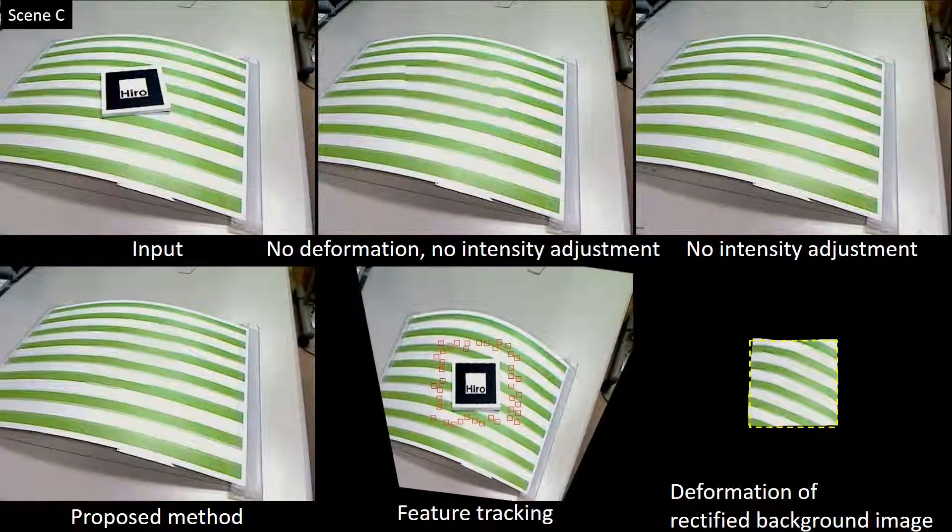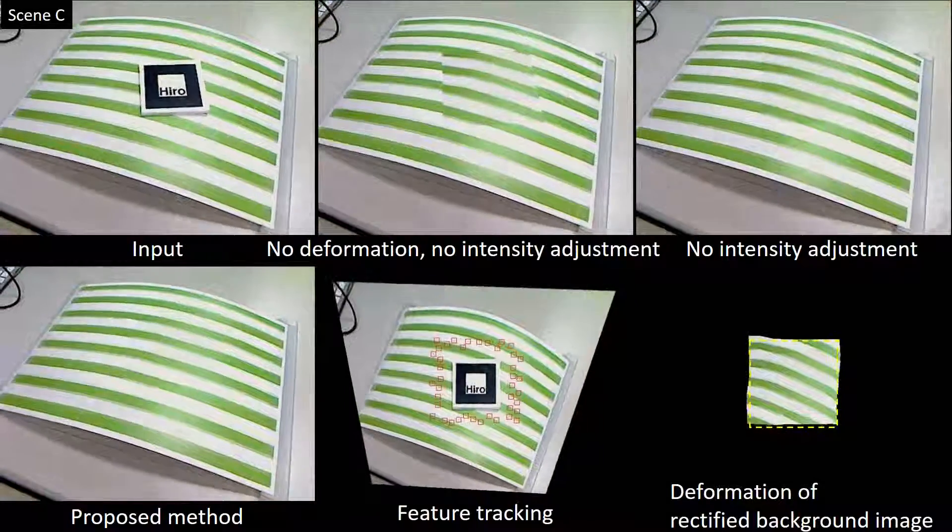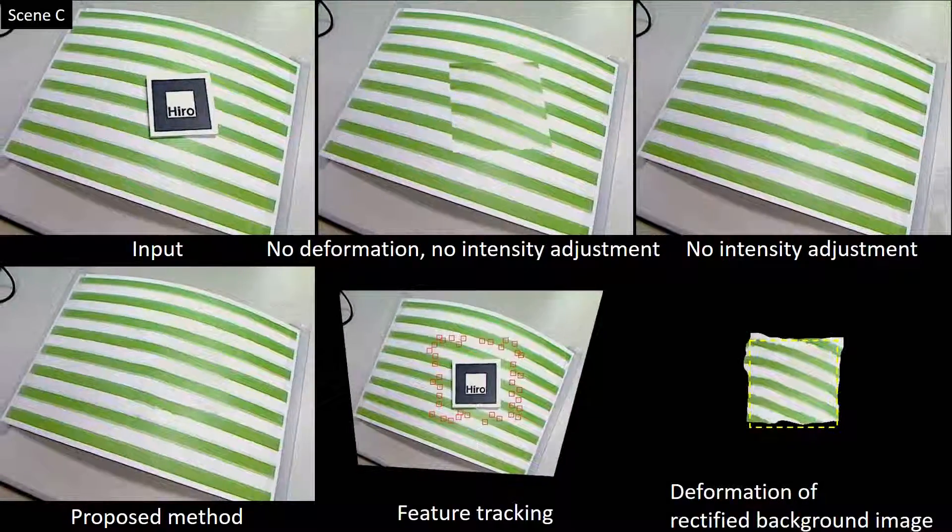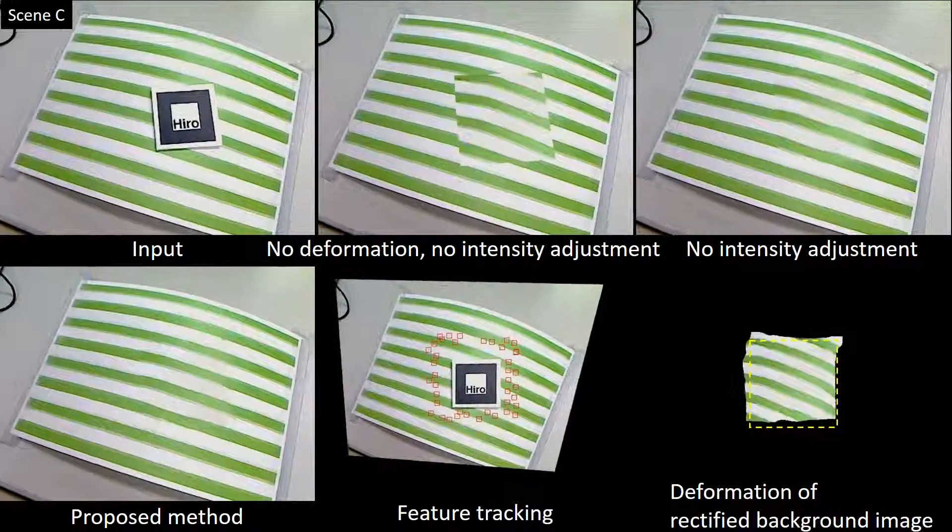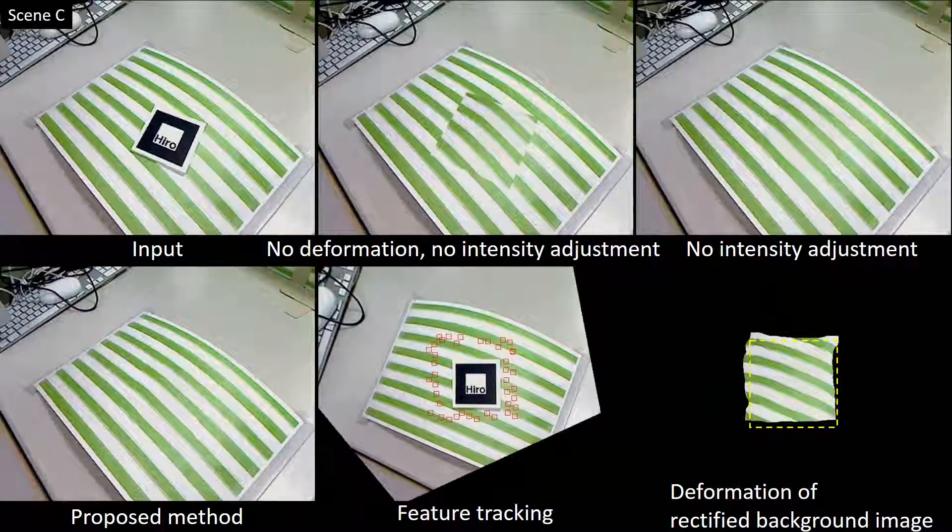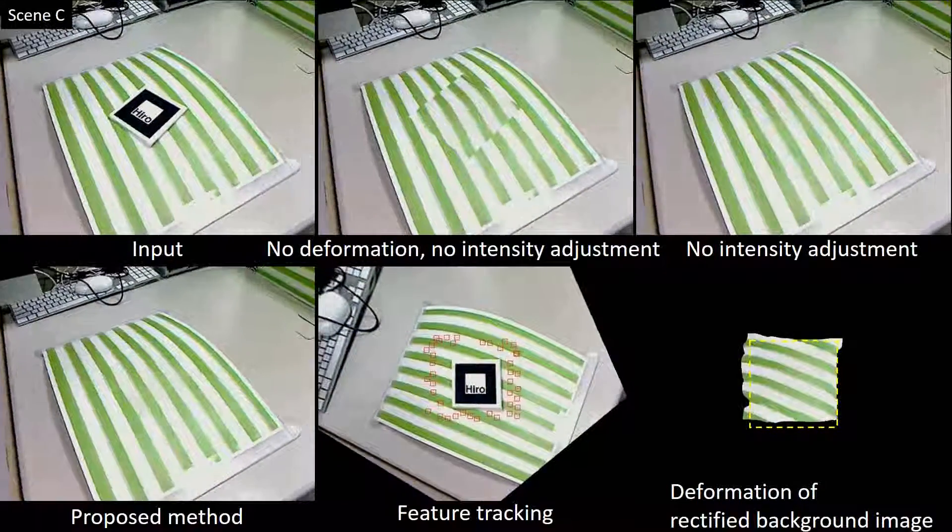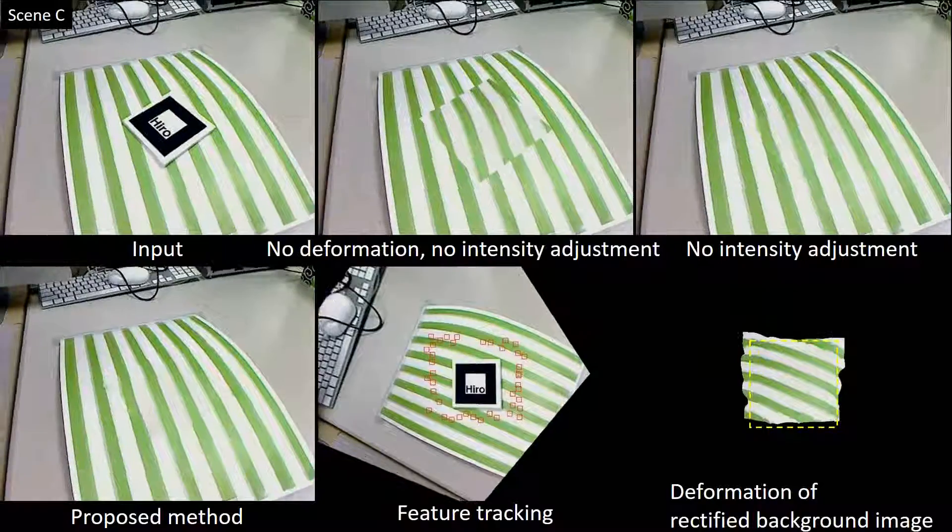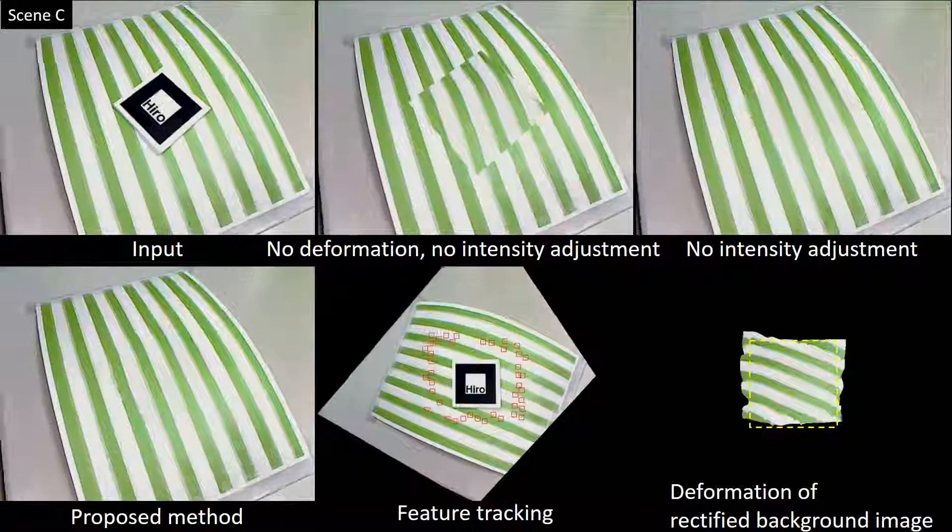In scene C, the marker is placed on a curved geometry with a stripe pattern. Similarly to scene B, our method produces a more plausible texture than those without deformation and intensity adjustment. However, we can also see small distortions in the stripe pattern.